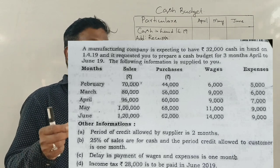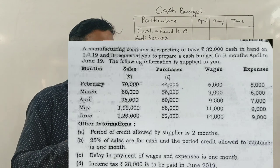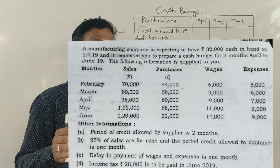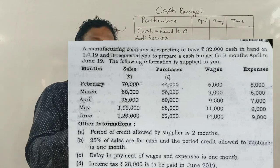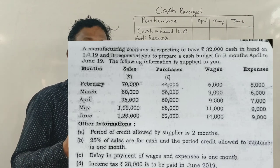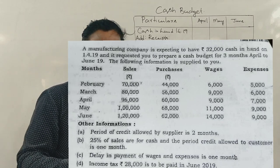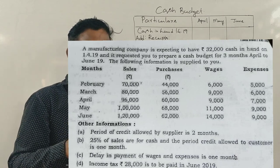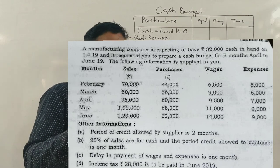The following information is supplied: sales, purchases, wages, and expenses for February, March, April, May, June are given. The period of credit allowed by the supplier is two months — meaning if you make a purchase this month, the supplier gives two months credit, so payment is made two months later.